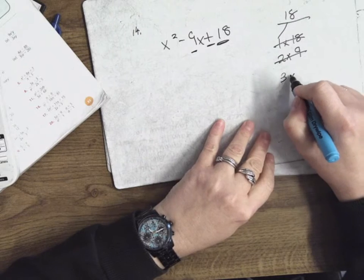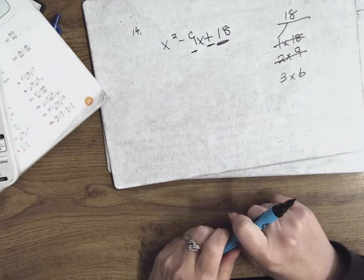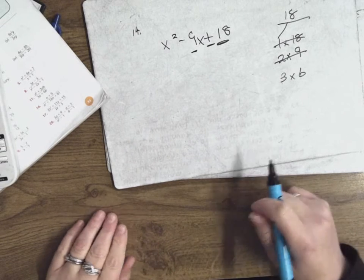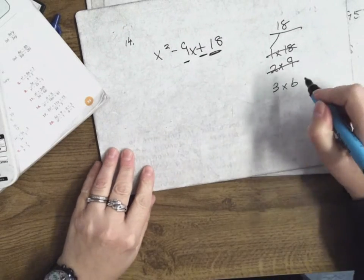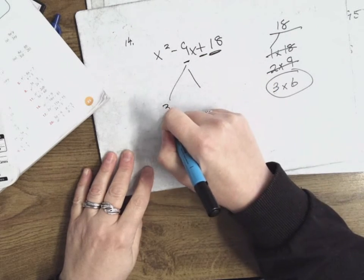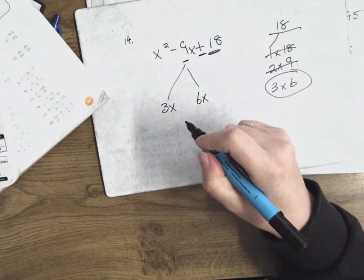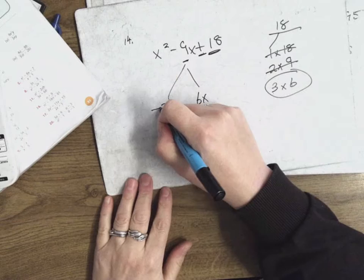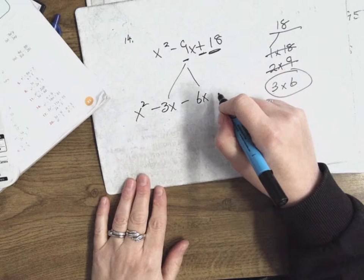3 by 6 — they add to give me 9. So it's 3 and 6 because they add to give me 9. I'll split this 9x into a 3x and a 6x. If I'm adding them — a plus — that means I give them the same sign, so it's either plus-plus or minus-minus. I want to end up with minus 9x, so it's minus 3x minus 6x. Then x squared is at the front and plus 18 is at the end.